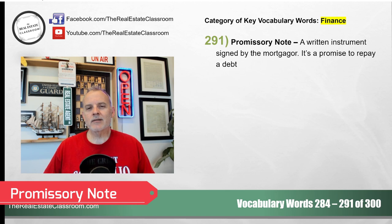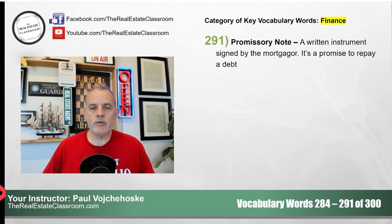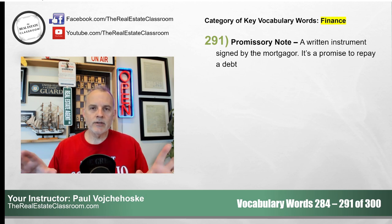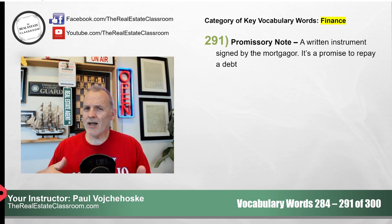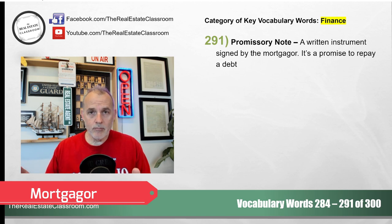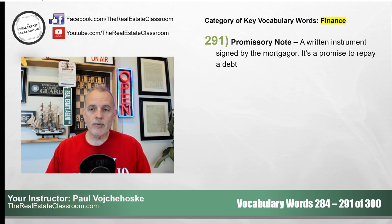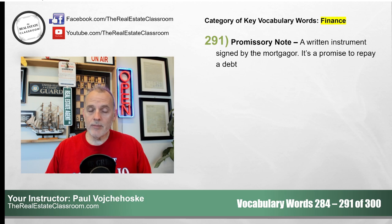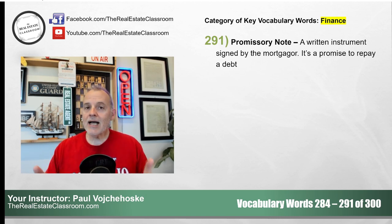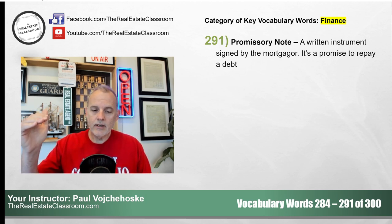Promissory note — and it's not promissory with an A, it's promissory note. It is a written instrument, a document signed by the mortgagor. The mortgagor is the borrower. The mortgagee — with two E's — is the lender. So the mortgagor or borrower signs the promissory note. The promissory note is a promise to repay a debt according to specified terms and conditions. Remember, it's not the collateral — it's just a promise to repay a debt over a certain period of time under those conditions.